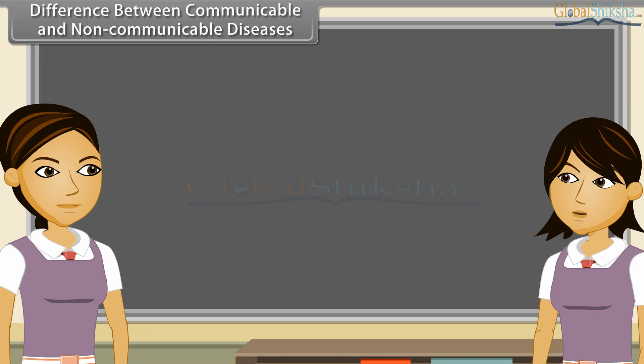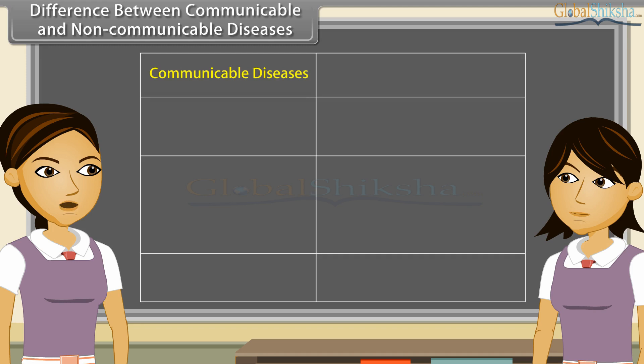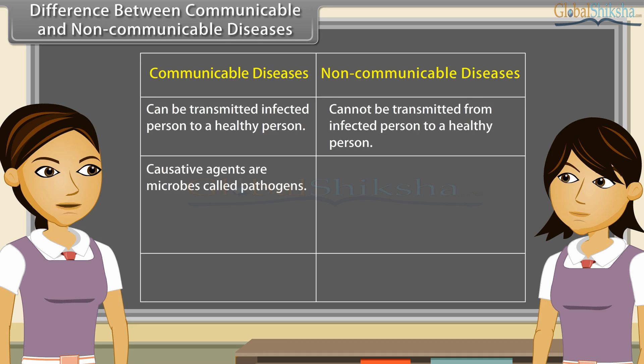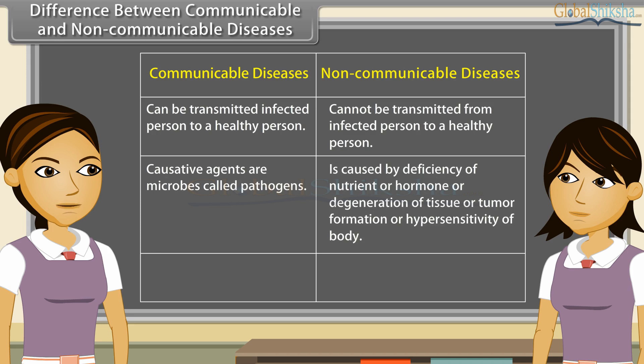Can you tell me the difference between communicable and non-communicable diseases? Communicable diseases can be transmitted from an infected person to a healthy person, while non-communicable diseases cannot be transmitted. Communicable diseases are caused by microbes called pathogens. Non-communicable diseases are caused by deficiency of nutrient or hormone, degeneration of tissue, tumour formation, or hypersensitivity of the body.